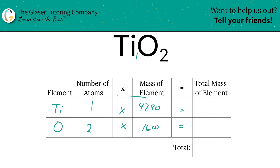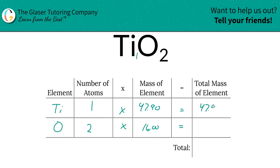Then we're going to find the total mass of the element in the compound by simply multiplying across. So that's 47.90 for titanium. Oxygen then is going to be 32.